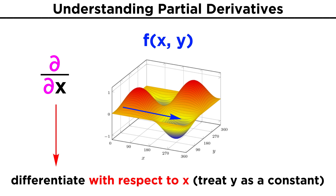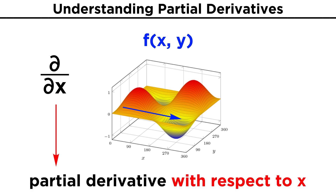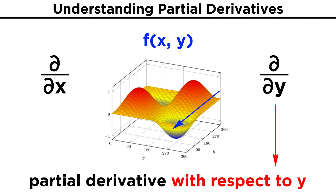This gives us the partial derivative notation. This is called a partial derivative, and it tells us to only treat x as the variable to differentiate. Similarly, if we wanted the rate of change in the y direction, this would be a partial derivative with respect to y. In this case, we would treat x as a constant.